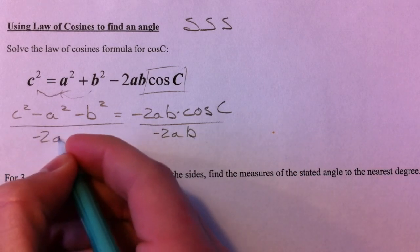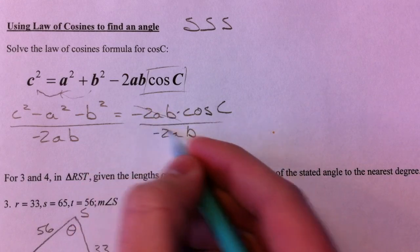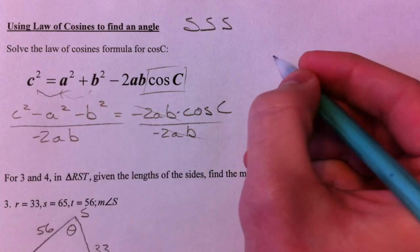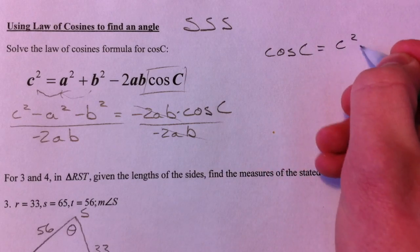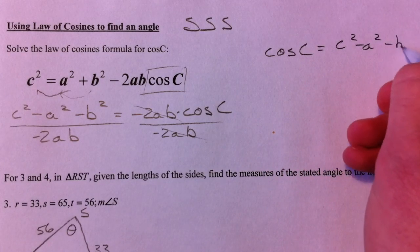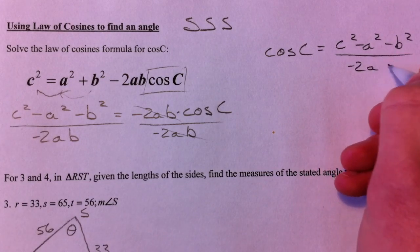Now if we divide, because this is multiplied by the cosine of C, divide by negative 2ab, divide by negative 2ab, cancels that out.